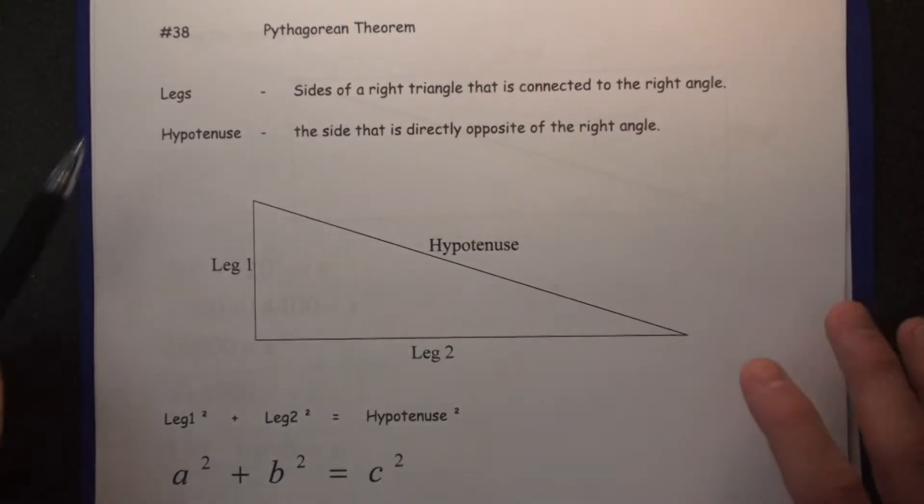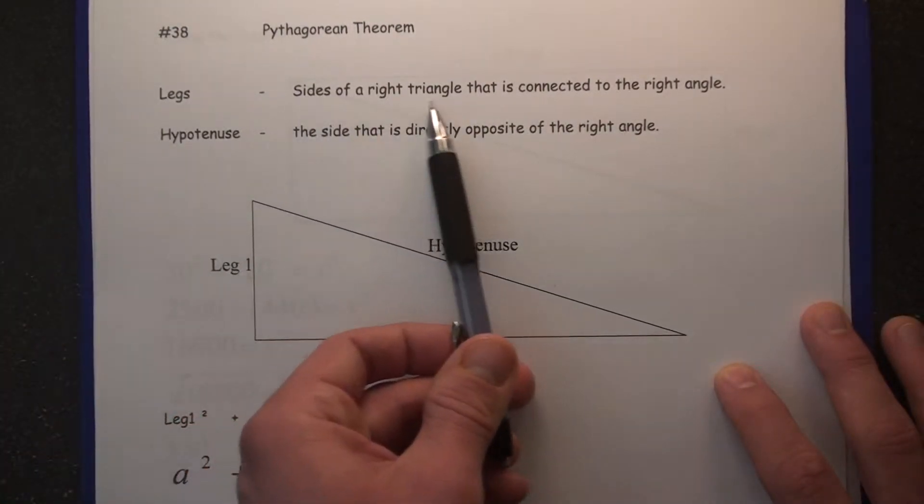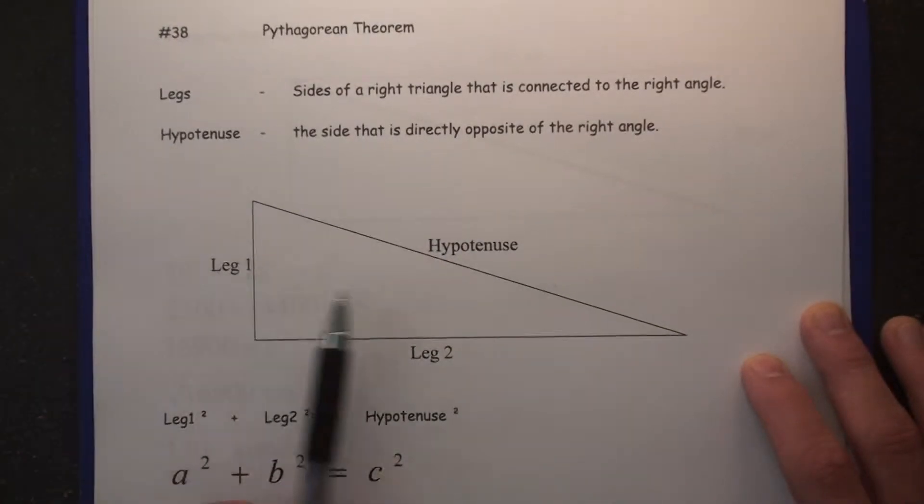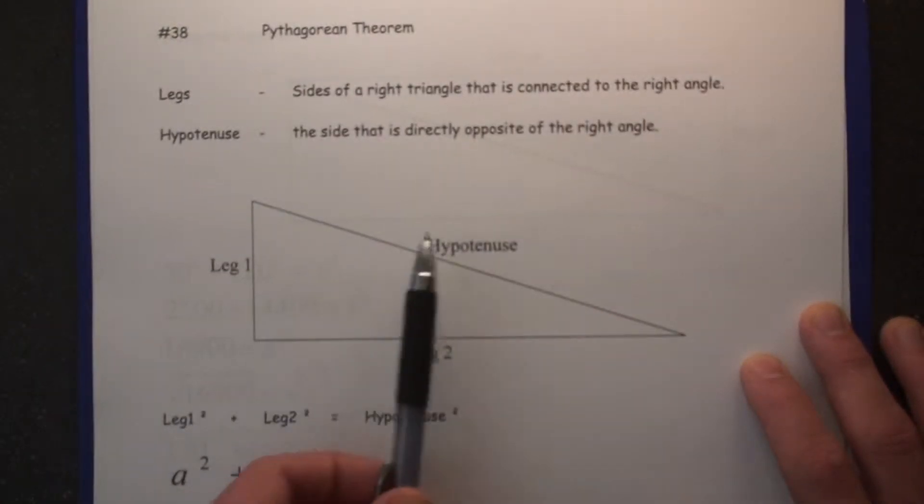The Pythagorean Theorem, let's take a look. The legs are the sides of the right triangle that are connected to the right angle. The hypotenuse is the side that is directly opposite of the right angle.